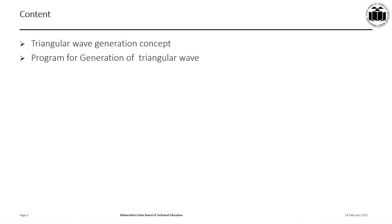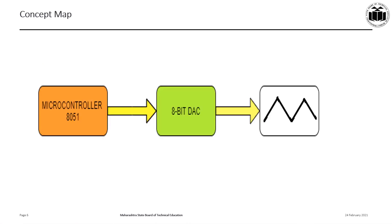The content of this presentation covers the triangular wave generation concept and the program for generation of a triangular wave. As you can see in this concept map, microcontroller 8051 sends digital data corresponding to a triangular wave to an 8-bit DAC. The 8-bit DAC converts this digital data into analog form and thereby generates a triangular waveform.